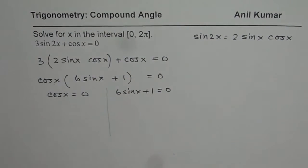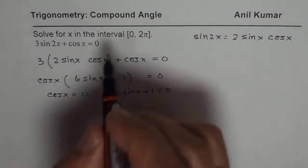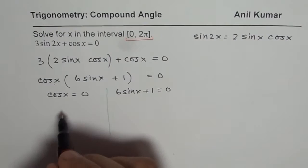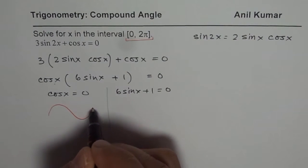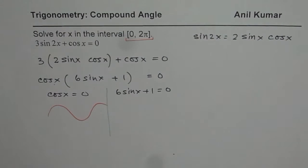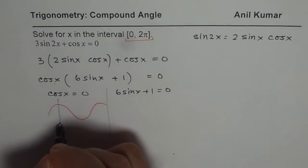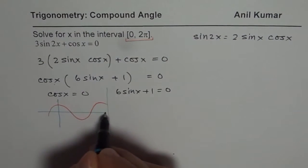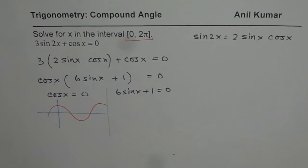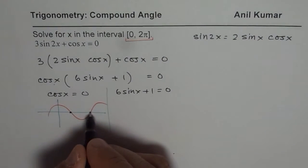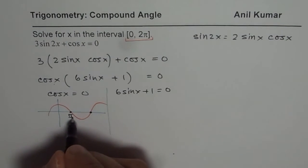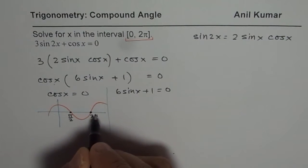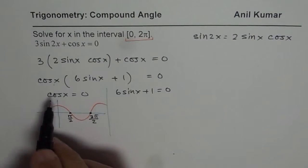Now cosx equals to 0 gives you how many solutions? You are working in the domain 0 to 2π. Correct. So cosine function is like what? So let me sketch one and show you. Cosine function starts with 1. Right. So that is how it is. And as you can see, it is 0 at two points. These are your two zeros. These zeros are at π/2 and 3π/2. So that is the solution from the first factor.